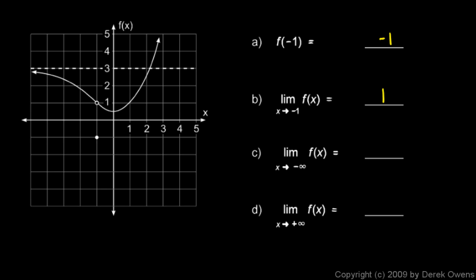Now the limit as x approaches negative infinity right down here. Well, as x grows without bound in the negative direction, the function here gets closer and closer to a y value of negative 3. So the limit as x approaches negative infinity. Excuse me, that's a positive 3. Positive 3 right up there.